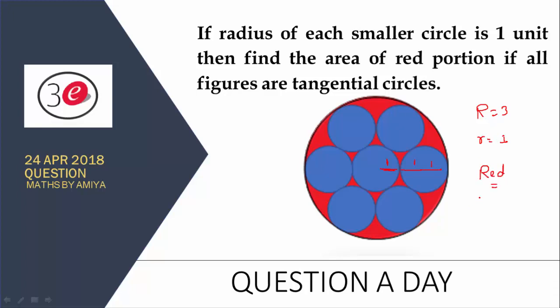So we can say the red portion is nothing but the bigger circle minus a smaller circle into 7 times. How come? Because we have 7 such circles.